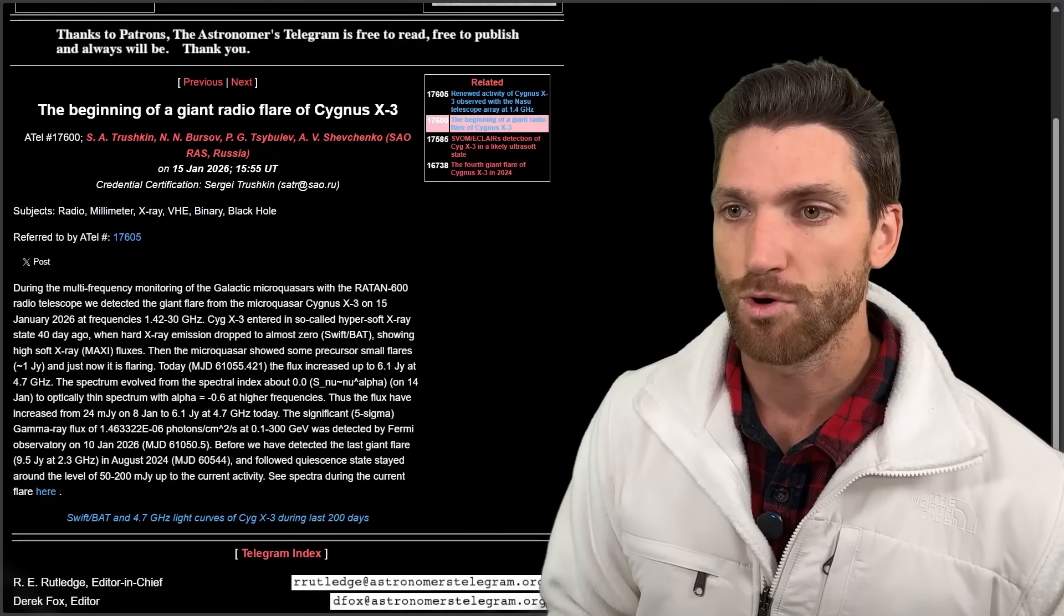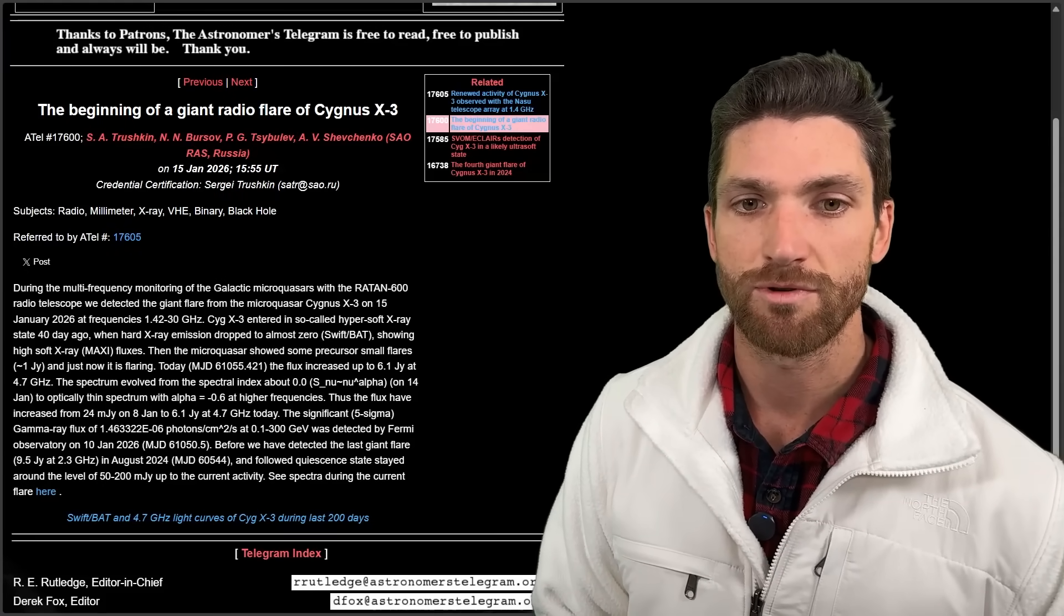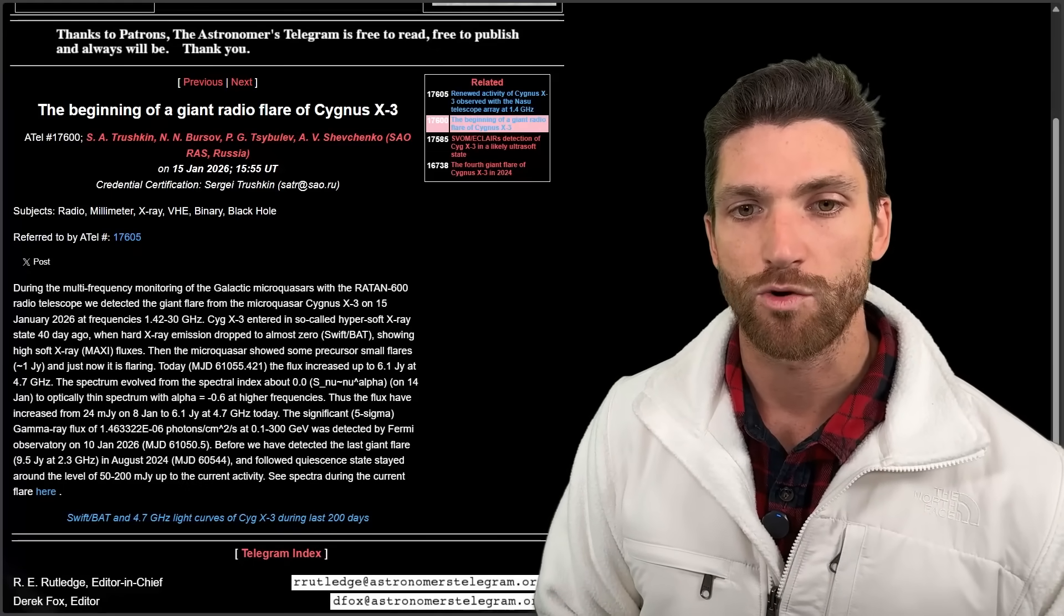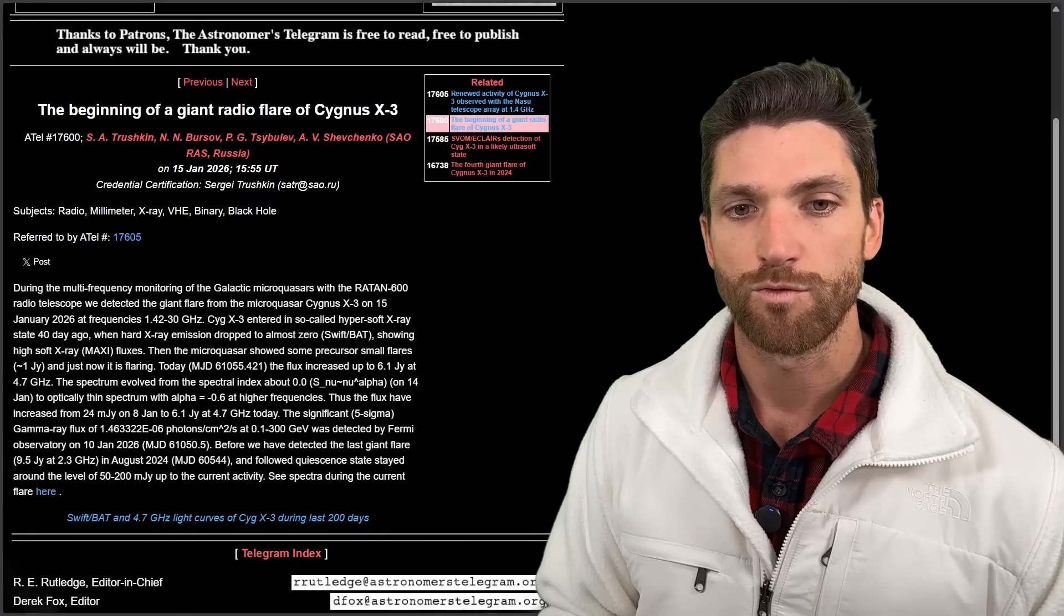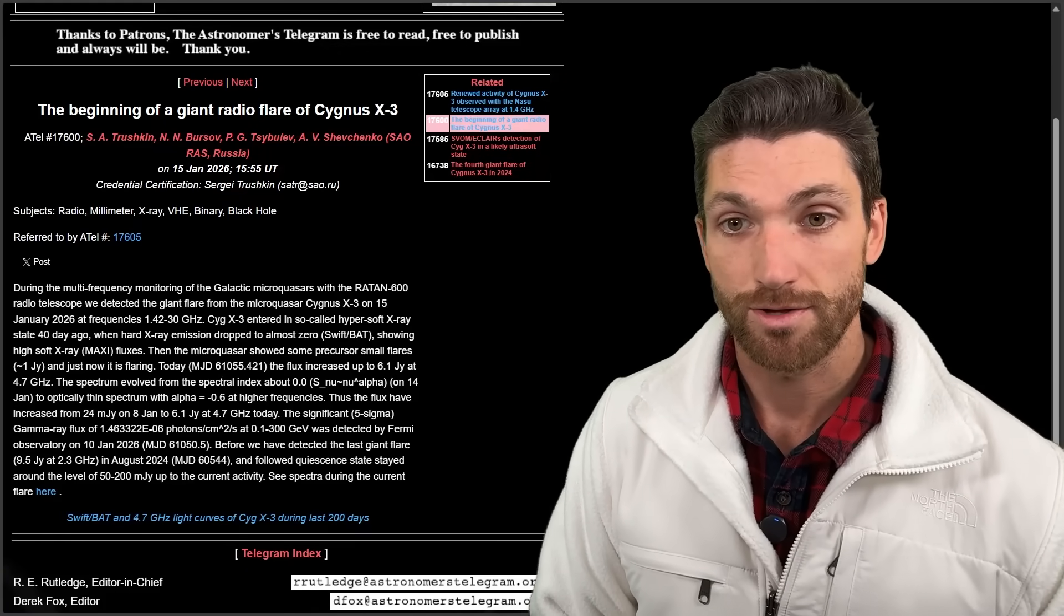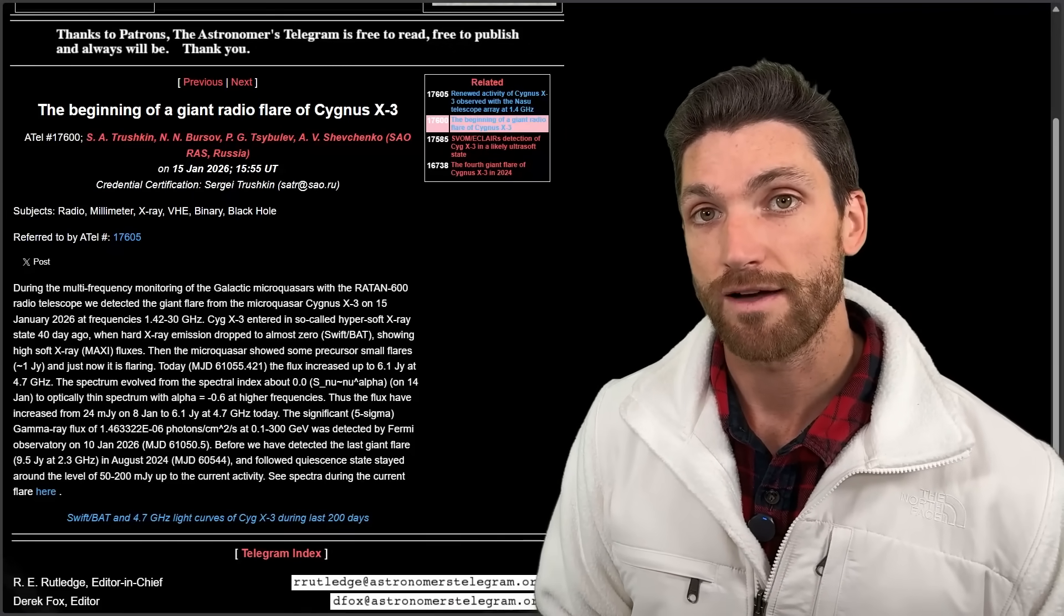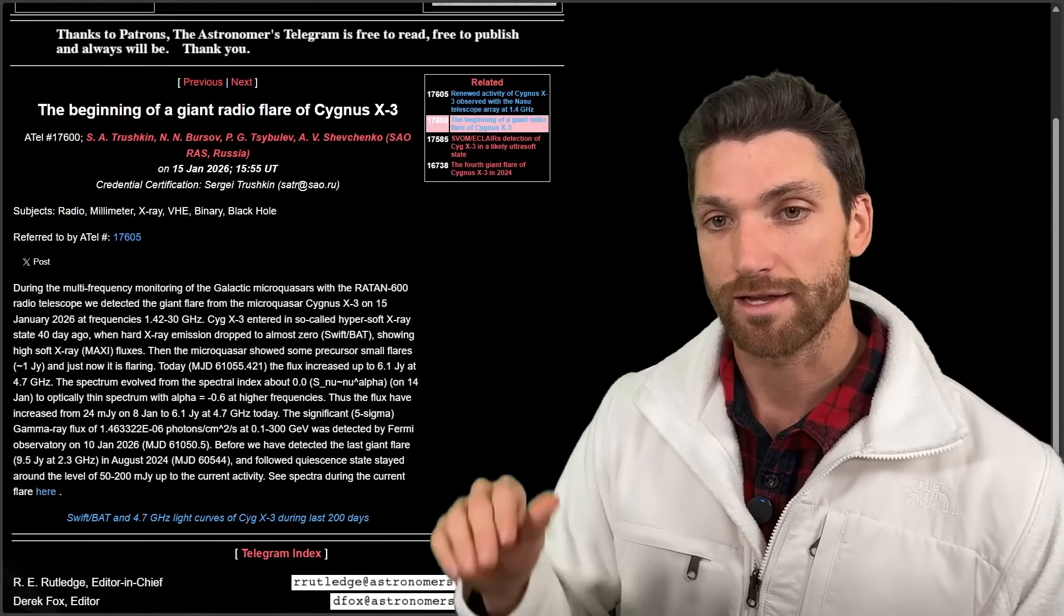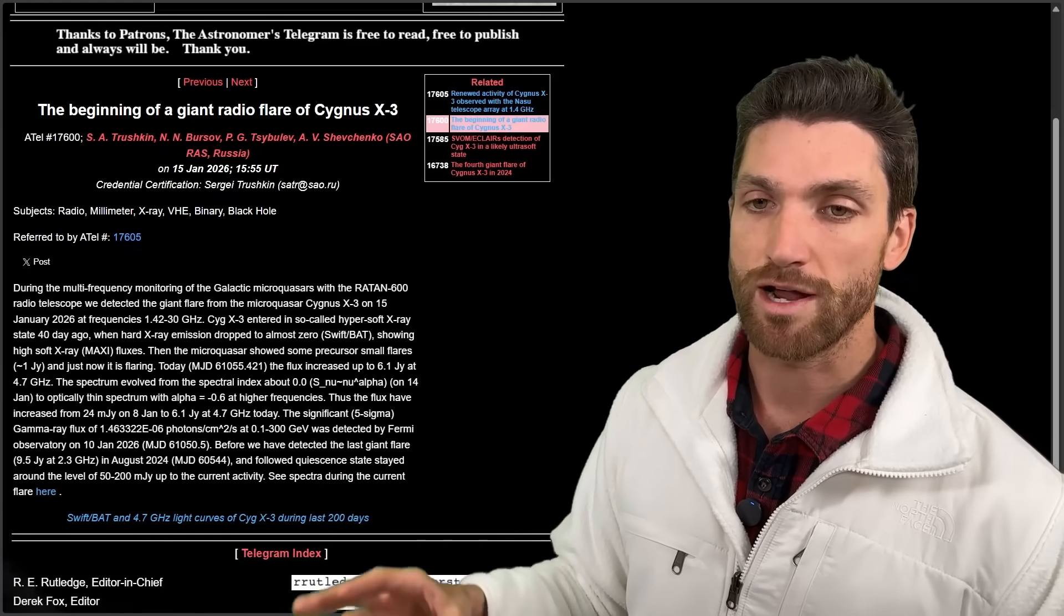This was published on the 15th at 1555 UTC. During the multi-frequency monitoring of the galactic microquasars with the Rattan 600 radio telescope, we detected the giant flare from the microquasar Cygnus X-3 on the 15th of January at frequencies of 1.42 to 30 gigahertz. This is actually the same frequency range that your Wi-Fi router uses as well as 5G.